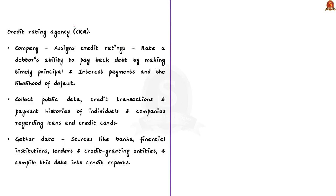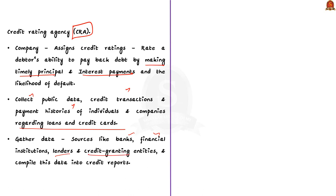A Credit Rating Agency or CRA is a company that assigns credit ratings which rate debtors' ability to pay back the debt by making timely principal and interest payments. They collect public data, credit transactions, and payment history of individuals and companies regarding loans, credit cards, etc. The primary function is to gather data from various sources like banks, lenders, financial institutions, and other rating agencies. The CICs then compile this data and make a credit report.